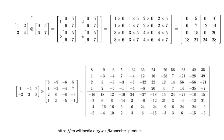Simple example of Kronecker product: given a 2×2 matrix [1,2;3,4] and another 2×2 matrix [0,5;6,7], we take each element of the first matrix and multiply it with all elements of the second matrix. So: 1⊗[0,5;6,7], then 2⊗[0,5;6,7], then 3⊗[0,5;6,7], then 4⊗[0,5;6,7]. The result is the Kronecker product output.